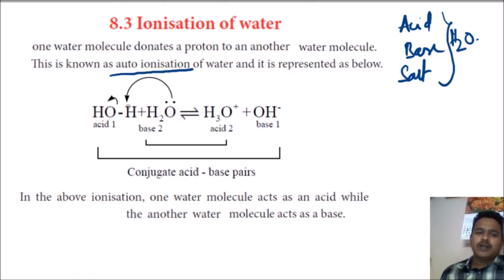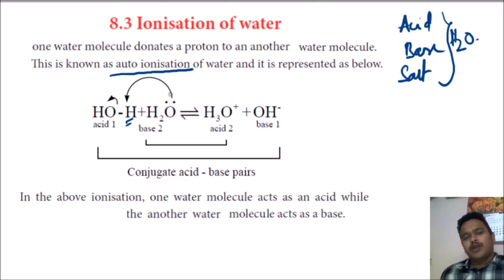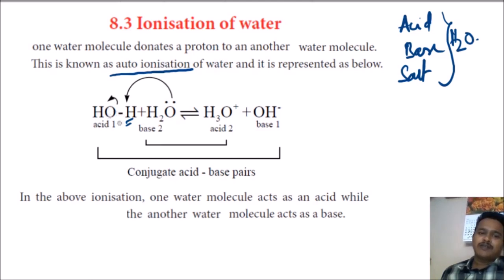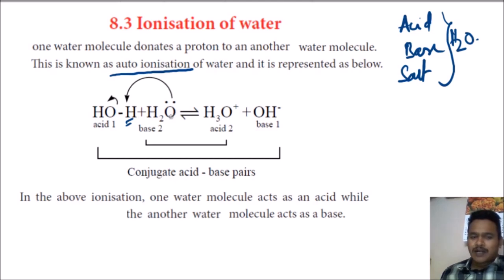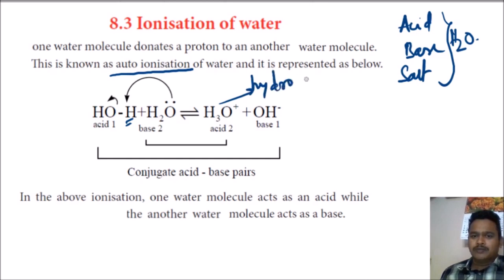In these two water molecules, one water molecule is donating H+, and the other water molecule is accepting that H+ by donating an electron pair. The molecule that donates an electron pair is a base; the one that donates a proton is called an acid. The water molecule accepting H+ forms H3O+, which is called the hydronium ion. In some books, this hydronium ion is also represented as H+.